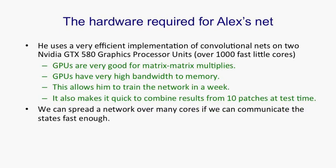Using all that hardware, he could train his final network in a week, and could combine results from 10 different patches at test time very quickly — running at just about the frame rate. In future, we're going to be able to spread this kind of network over a large number of cores, and as cores become cheaper, people at Google are already experimenting with that. If we can communicate states fast enough, we'll be able to do much bigger networks on many more cores.